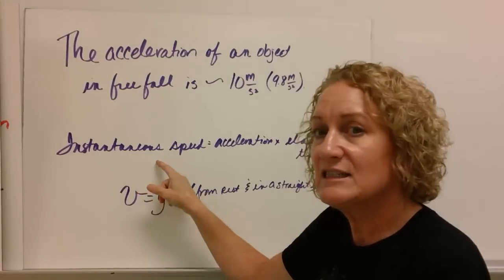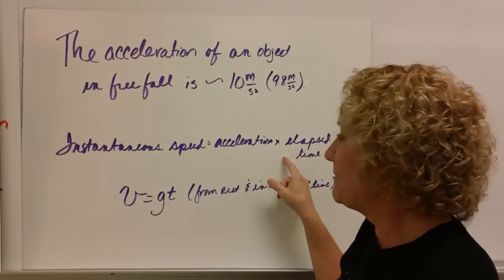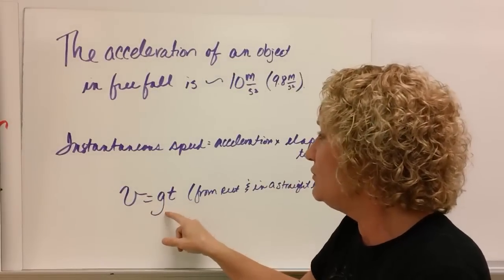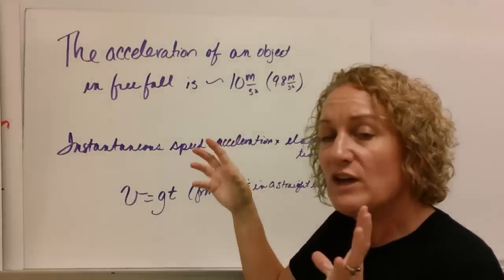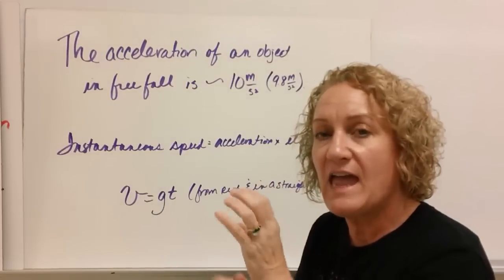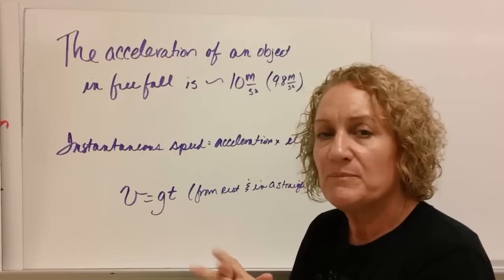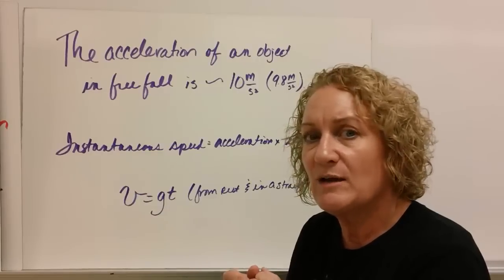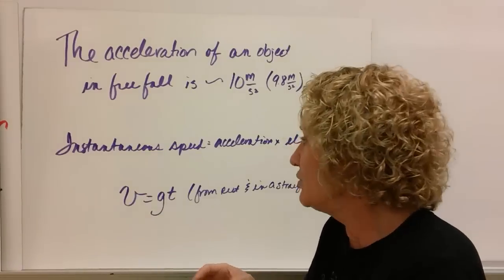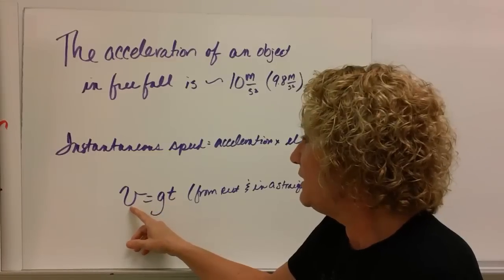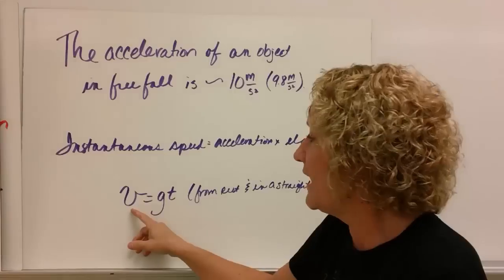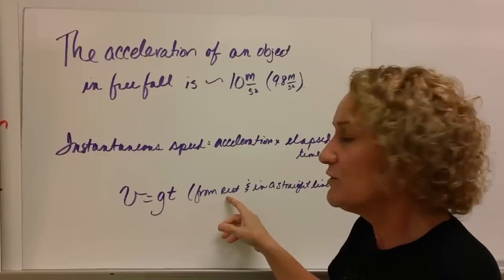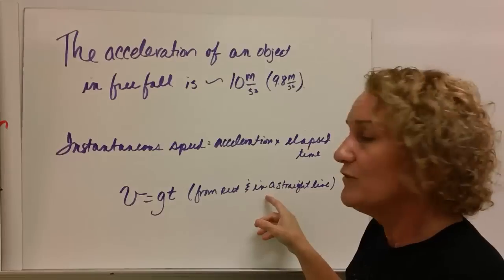The acceleration of an object in free fall is about 10 meters per second squared. How do you calculate instantaneous speed? It's acceleration times elapsed time. We use g for this number when gravity is the only thing acting on it. From now on, g means 10 meters per second squared. If you need to be real accurate, you can do 9.8. So instantaneous velocity is equal to acceleration due to gravity times time. This is assuming you're starting from rest and you're moving in a straight line.